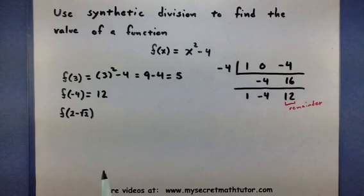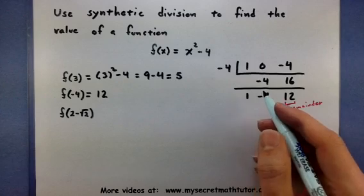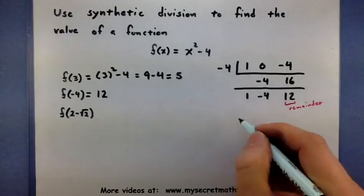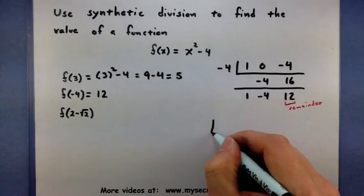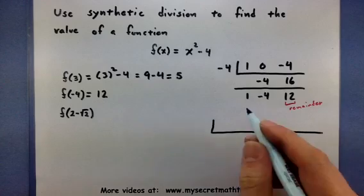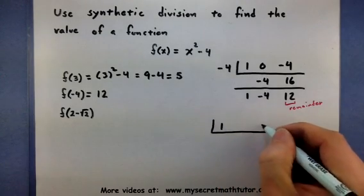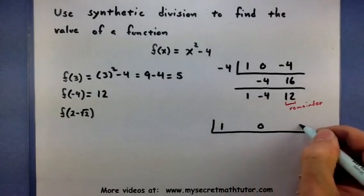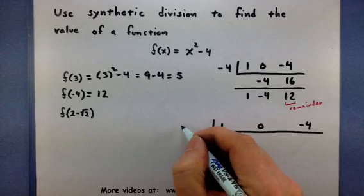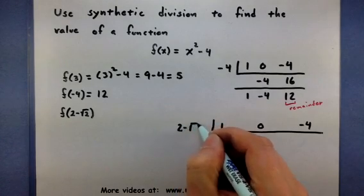Now this is especially handy for a more complicated input. Let's give this a try. So let's set up our division bar. I need a little bit of extra space for this one. So I got 1, 0, and a minus 4, and we're going to be testing out 2 minus the square root of 2.